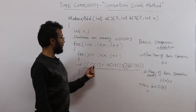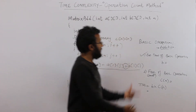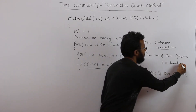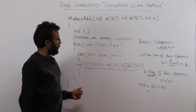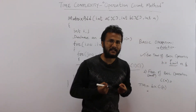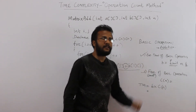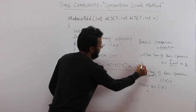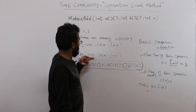Now we need to find the execution time of the basic operation — how much time does it take to add one element each of A and B. Let's say it takes one unit, or you may assume a constant time k units, since for different computers the addition operation may take different execution times. In this example, let's assume one unit. Next, find how many times the basic operation executes.